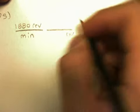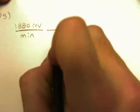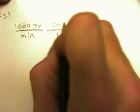So you're going to do this by dimensional analysis. So revolutions, in one revolution, there's 2 pi radians, so the revolutions cancel.